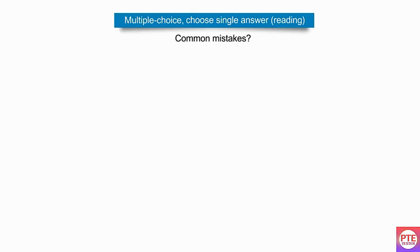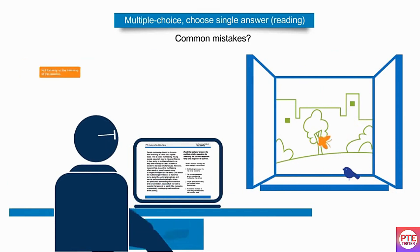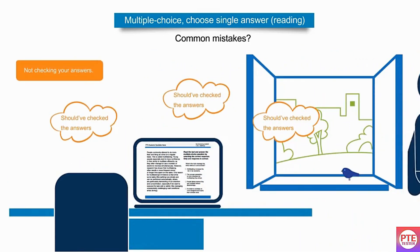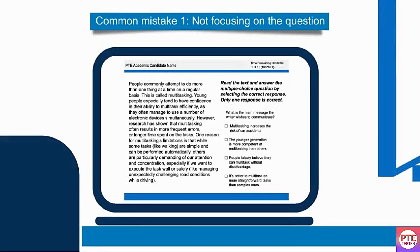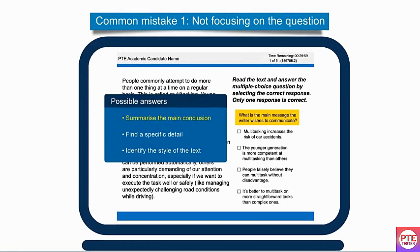In multiple-choice choose single answer reading tasks, what are some common mistakes to avoid? Not focusing on the meaning of the question, and not checking your answers. Let's look at these in more detail. Look at the question — what is it asking the test taker to do? Summarize the main conclusion of the text, find a specific detail in the text, or identify the style of the text?